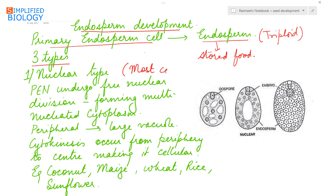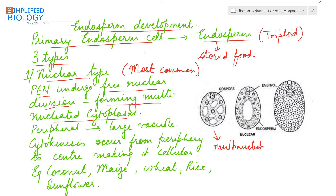The most common endosperm is the nuclear type. In the nuclear type, the primary endosperm nucleus undergoes free nuclear divisions — only karyokinesis occurs, no cytokinesis. The nucleus divides but the cytoplasm does not divide, forming a multi-nucleated cytoplasm. This multi-nucleated cytoplasm then becomes peripheral due to the development of a large vacuole in between, after which cytokinesis or wall formation takes place from the periphery towards the center.